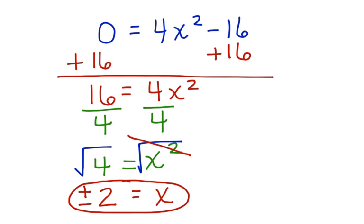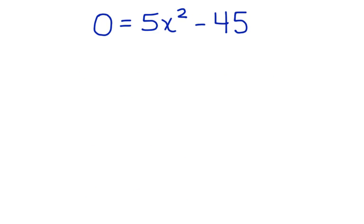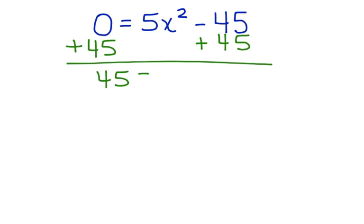Let's look at another one. 0 equals 5x squared minus 45. Again, we want to get x alone. So we're going to add 45 to both sides of this equation. And we end up with 45 equals 5x squared.